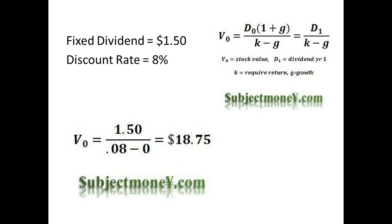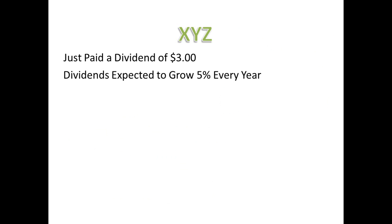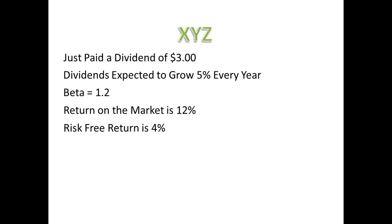Let's do an example. Suppose XYZ Company just paid a dividend of $3.00. The dividend is expected to grow at a rate of 5% indefinitely. XYZ has a beta of 1.2. The return on the stock market is 12%, and the risk-free rate is 4%. What would the intrinsic value of XYZ's stock be according to the dividend discount model?